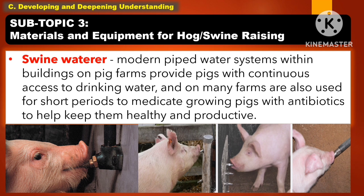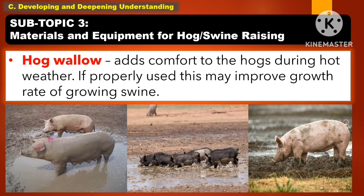Another material and equipment for swine raising is the swine water system. It is a modern pipe water system within the buildings on pig farms, providing pigs with continuous access to drinking water. On many farms it is also used for short periods to medicate growing pigs with antibiotics to help keep them healthy and productive. Another material and equipment for swine raising is the hog wallow. It adds comfort to the hogs during hot weather and, if properly used, may improve the growth rate of the growing swine.